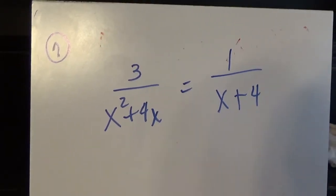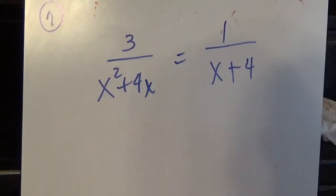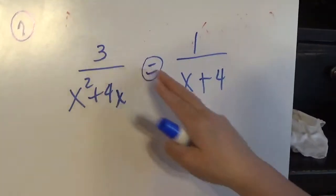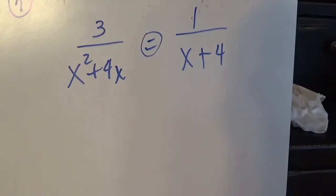Example 7. I notice I have a single fraction on both sides connected by an equal sign. That means I can cross multiply because of the multiplication property of equality.